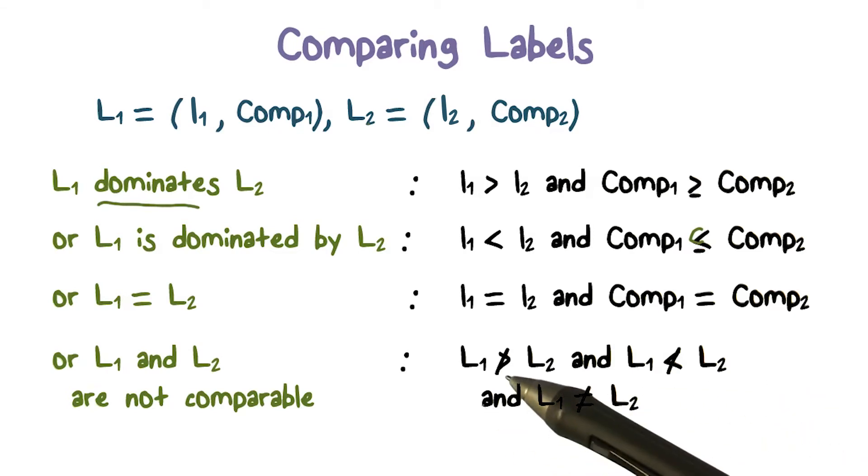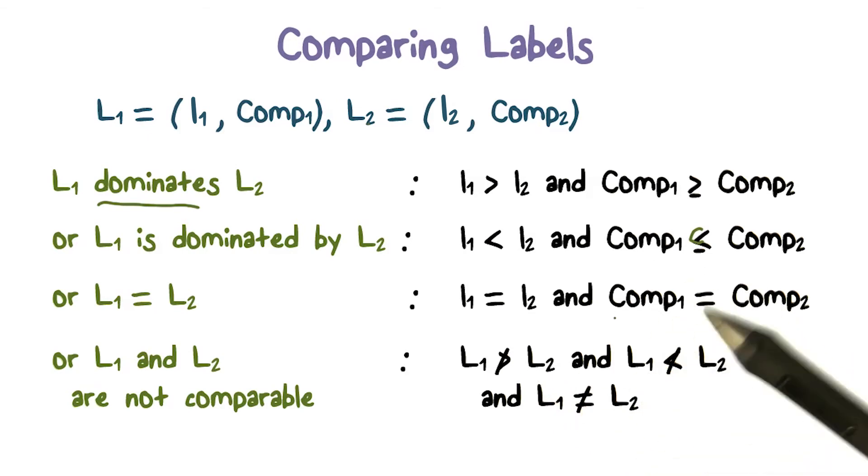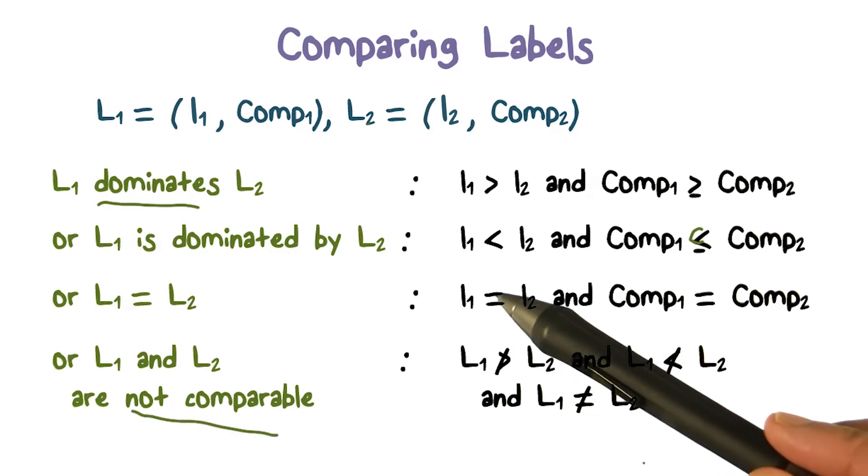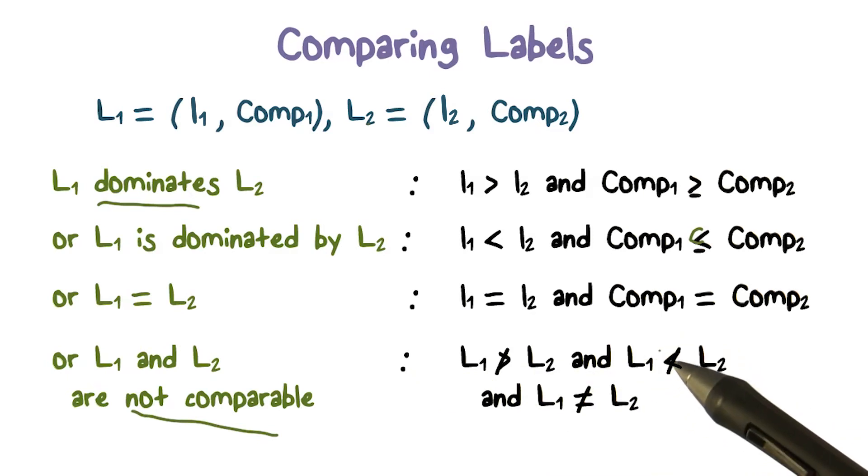L1 doesn't dominate L2. L1 is not dominated by L2. And the reason for that is we're talking about a label having two parts. So levels are obviously totally ordered. So you cannot be not comparable. It's not because the levels that you have within your label L1 and L2.